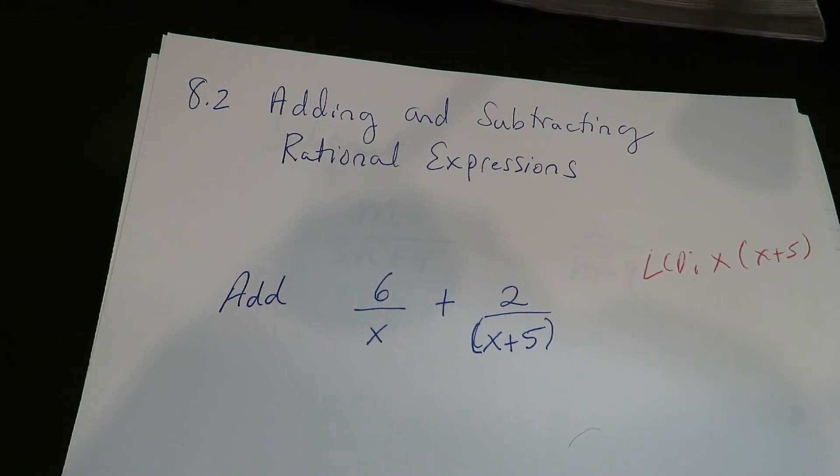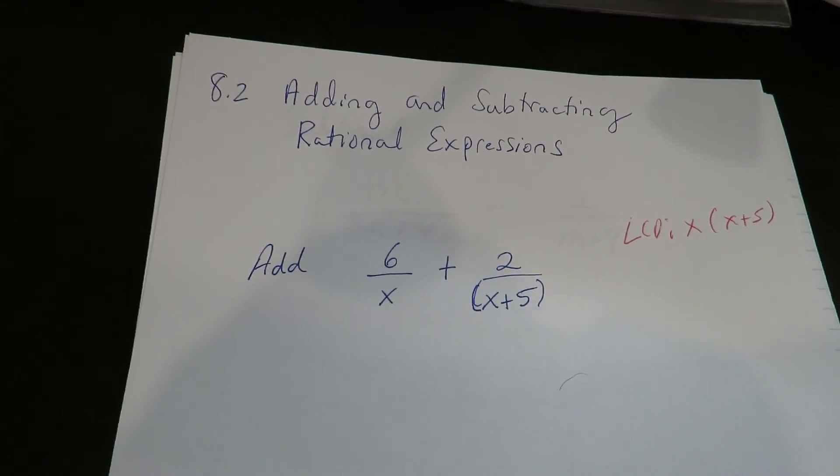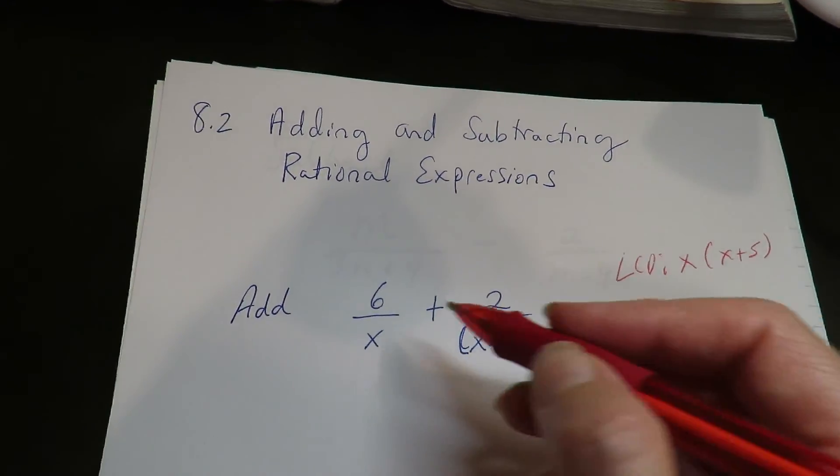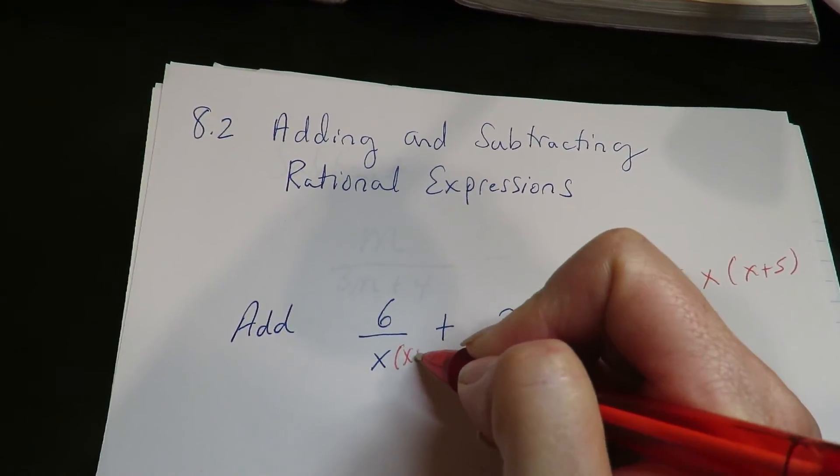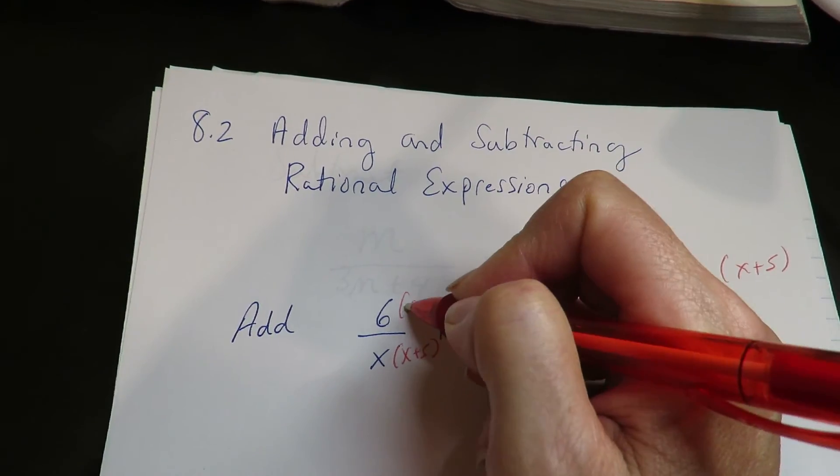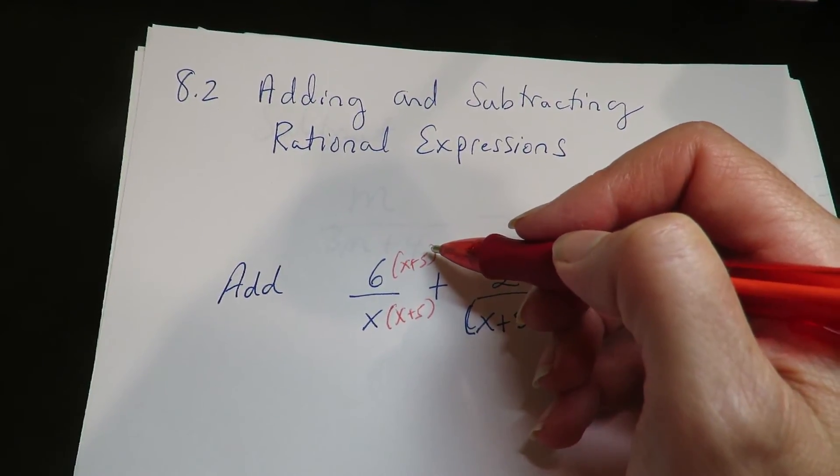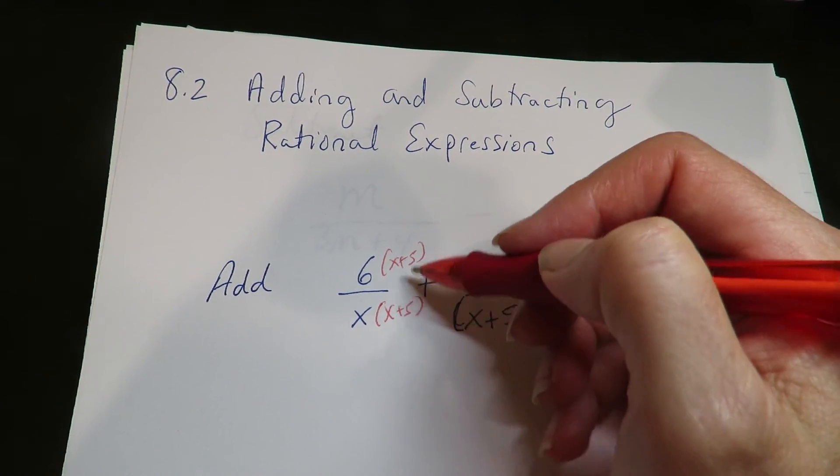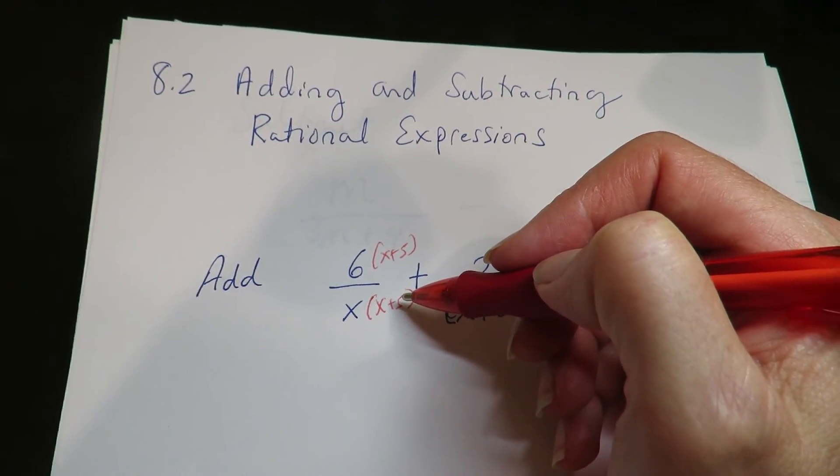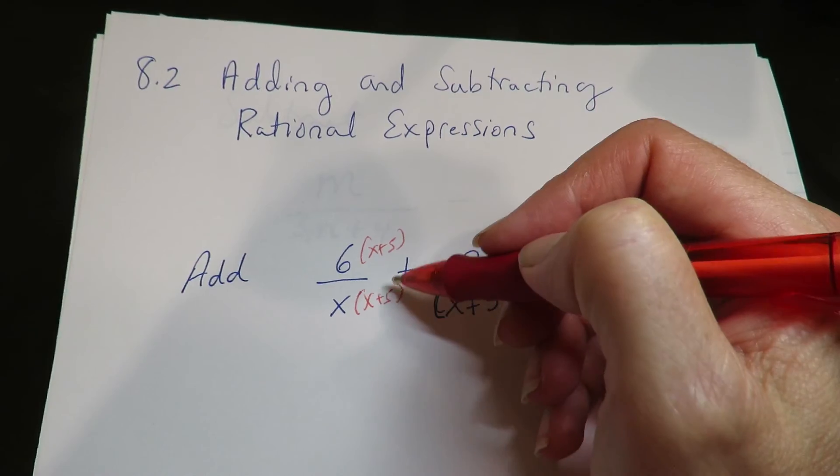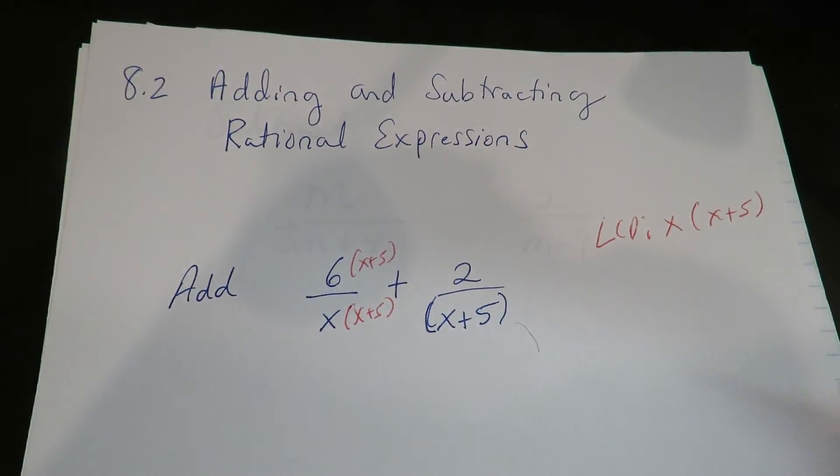Alright, so what I'm going to do is I'm going to build up the fractions so that they each have the same denominator. So this one is missing the X plus 5, so I need to give that to both sides. And the reason you give it to both sides is because X plus 5 over X plus 5 equals 1. So I'm actually just multiplying by a very fancy 1, which doesn't change the problem.